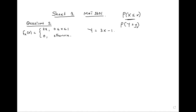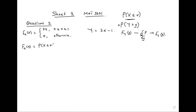We know that F_Y(y) is found by differentiating the capital F. We differentiate the CDF with respect to Y to get the PDF we're looking for. From the given f(x), we go to the CDF F(x), connect it to F_Y(y), then differentiate to get the PDF f_Y(y).